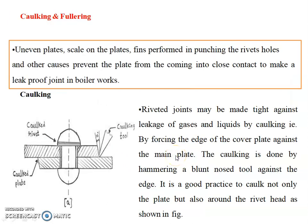Next we will discuss the caulking and fullering process. There are some uneven plates or scale on plates; the finish performed in punching the rivet holes and other causes prevent the plate from coming into close contact to make a leak-proof joint in boilers or pressure vessels. These causes prevent close contact between the plates, leading to chances of gas or liquid leakage.